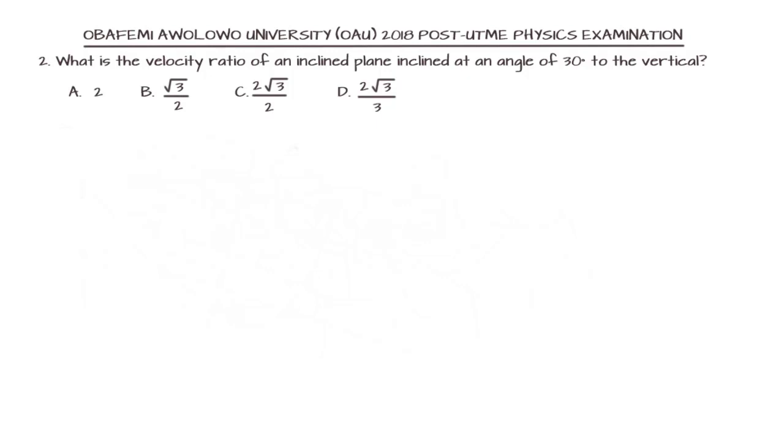In this question, we are asked to find the velocity ratio of an inclined plane inclined at an angle of 30 degrees to the vertical.